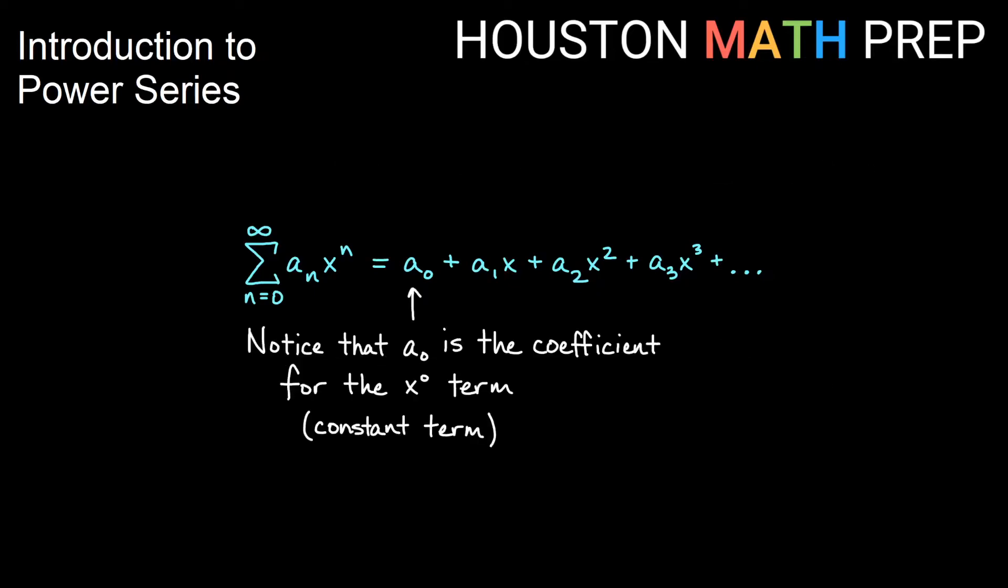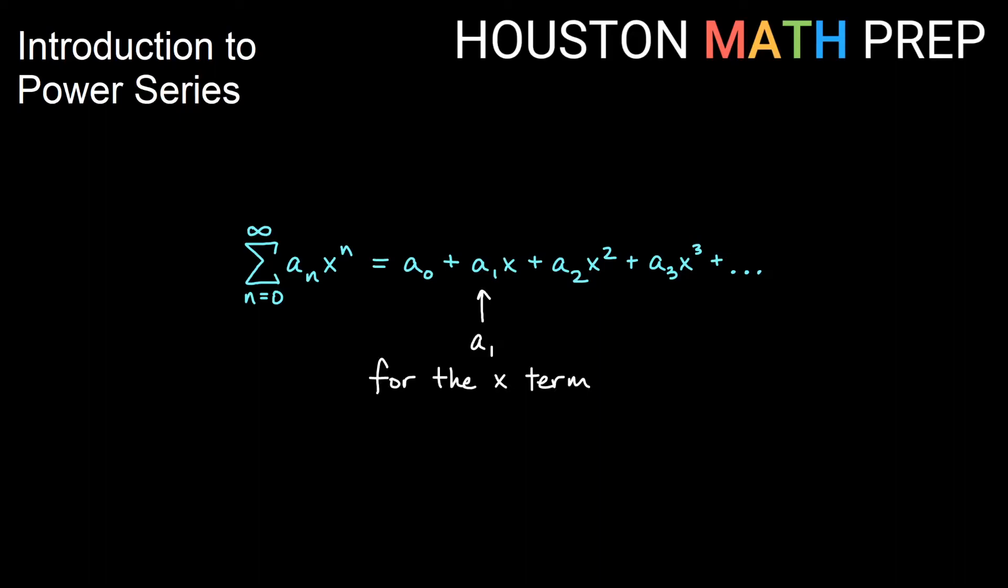So our example here, the a sub 0, that is basically the constant term, but that's the coefficient for the x to the 0 term. Our a sub 1 is the coefficient for the x to the power 1 term, a sub 2 for the x squared term.